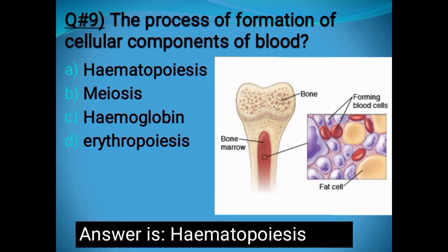Question number nine: What is the process of formation of cellular components of blood? Options: Hematopoiesis, Myiasis, Hemoglobin, or Erythropoiesis. The correct answer is Hematopoiesis. Blood cells — including erythrocytes, leukocytes, and thrombocytes — are produced in the bone marrow.